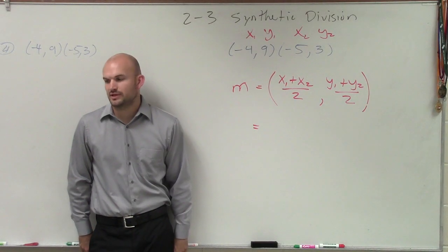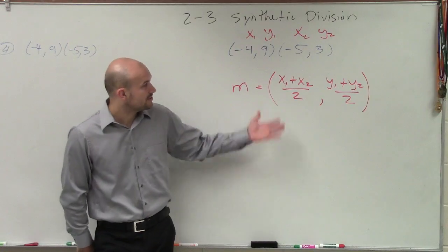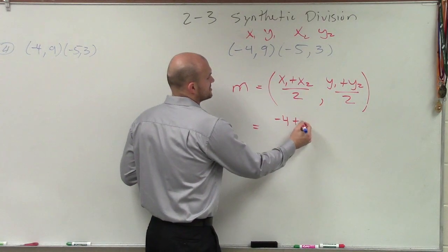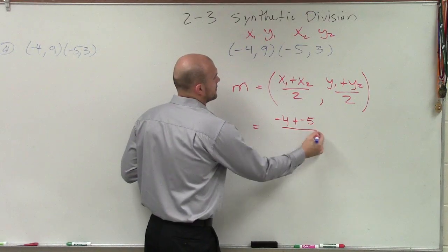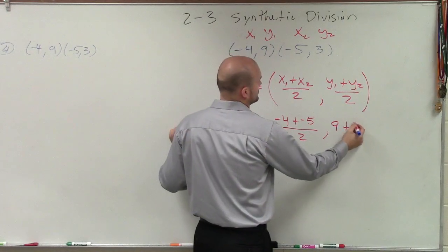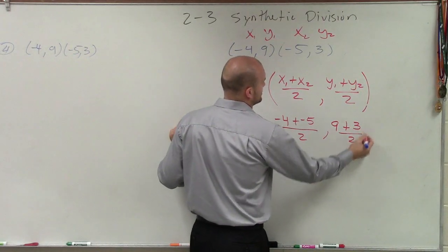So you want to make sure you have that when you guys go into future problems. So therefore, in this case, I have x1, which is negative 4, plus negative 5, divided by 2, comma y1, which is 9, plus y2, which is 3, divided by 2.